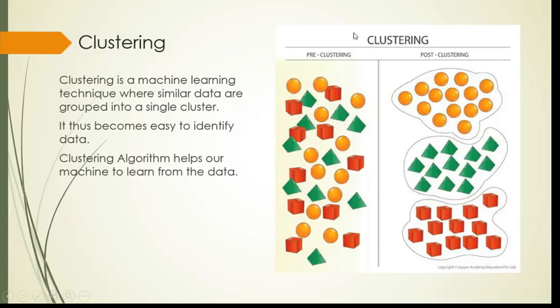We've been taught. Now we want to teach machines—how do we do it? Through an algorithm. In this we're using a clustering algorithm. What it does is it clusters the similar data into one cluster, making three clusters of similar data. This is what clustering is, and it makes it easy to identify data. Clustering algorithms help our machine to learn from the data.